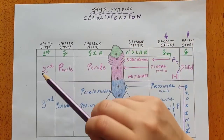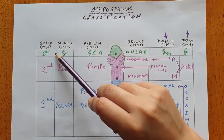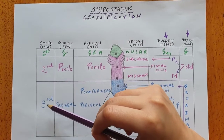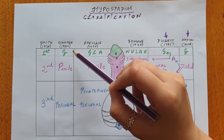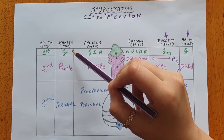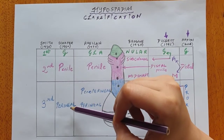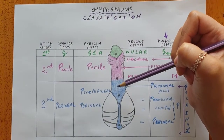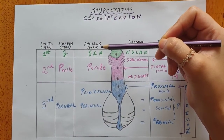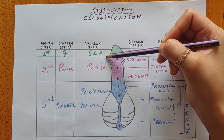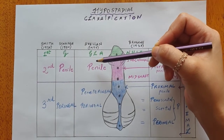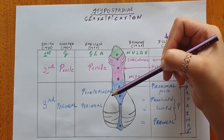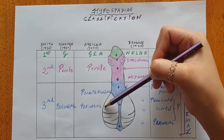The initial classification was given by Smith in 1938 and was plainly put as first, second, or third degree. The Schaeffer classification in 1950 classified it as glanular, penile, or perineal depending on where the urethral opening was present. Avalon in 1975 classified it as glanular and penile, similar to Schaeffer, with the difference being that the perineal type was further subdivided into peno-perineal and the perineal types.